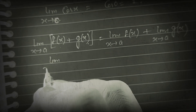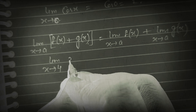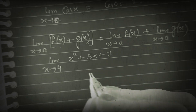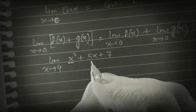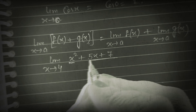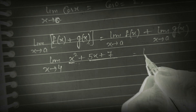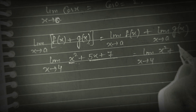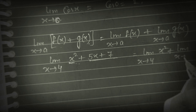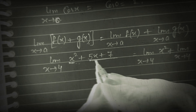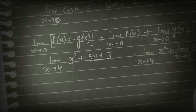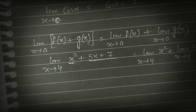For example, limit x tends to 4 of (x² + 5x + 7). Suppose x² is f(x), 5x is g(x), and 7 is h(x). So we apply limit on each: limit x tends to 4 of x², plus limit x tends to 4 of 5x, plus limit x tends to 4 of 7.